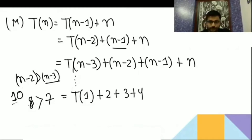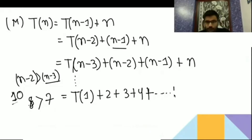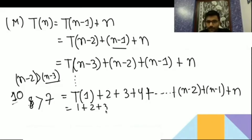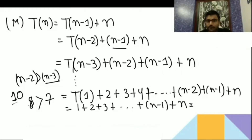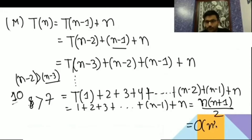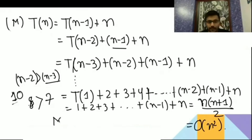It goes until n-1 + n. So it is 1 + 2 + 3 + ... + (n-1) + n, which is the sum of n natural numbers = n(n+1)/2, that is O(n²). So M is matched with W.